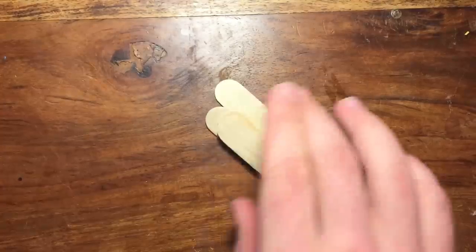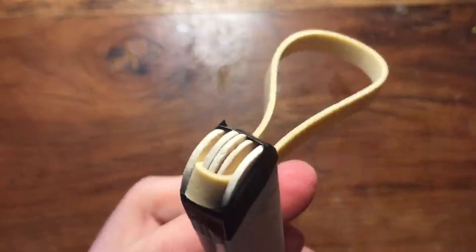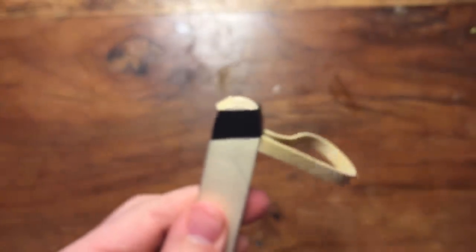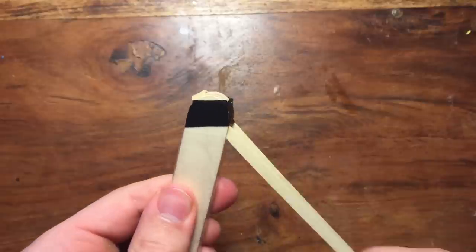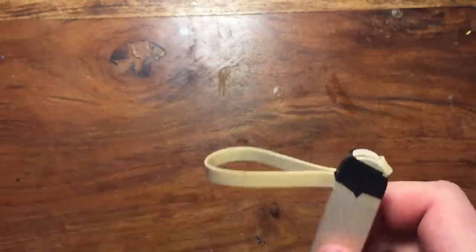Alright, to make the launcher just grab about 5 popsicle sticks and wrap the rubber band around 3 of them. Then take 2 more and put them on the outside, and then tape the whole thing up. Honestly you could just use anything as a launcher just as long as it fits in your hand and it has a rubber band on it. Alright, let's test it out.